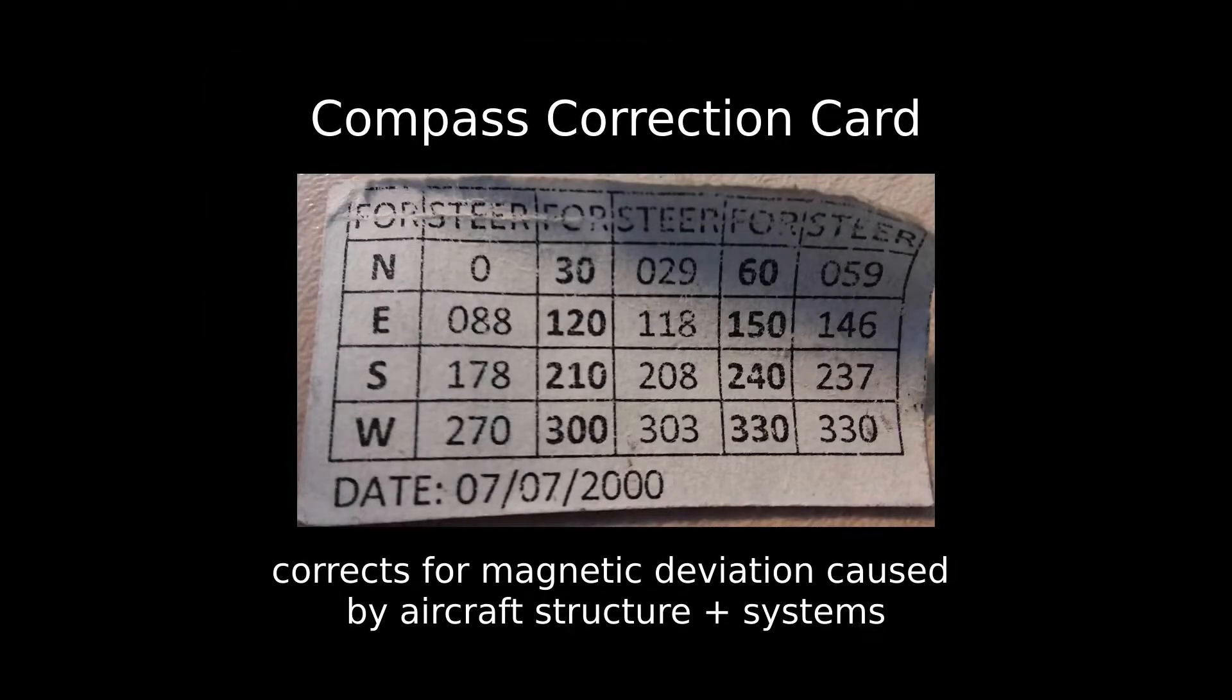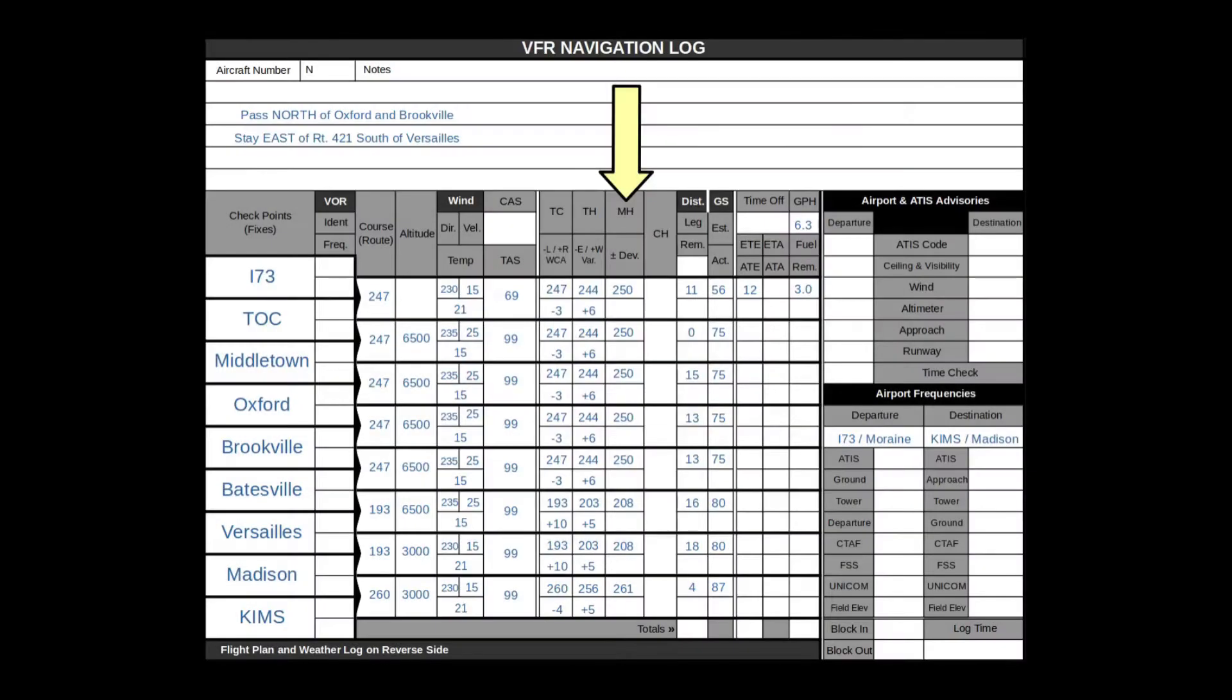Finally, the corrected heading is computed by applying the corrections described in the correction card that is installed in each airplane. This accounts for magnetic deviation caused by the systems installed in the aircraft itself. The corrected heading is the direction that you will actually point the aircraft in flight.